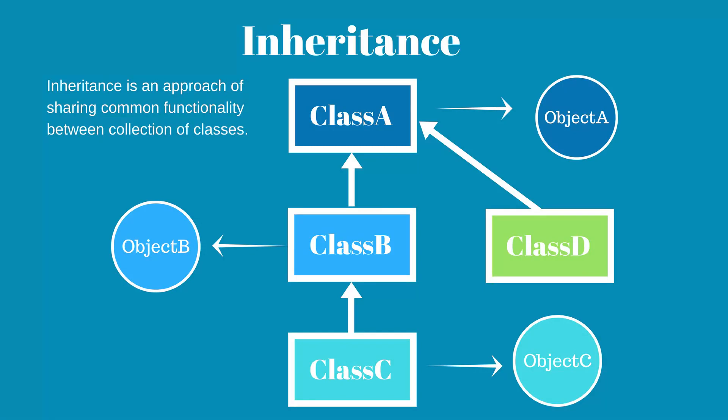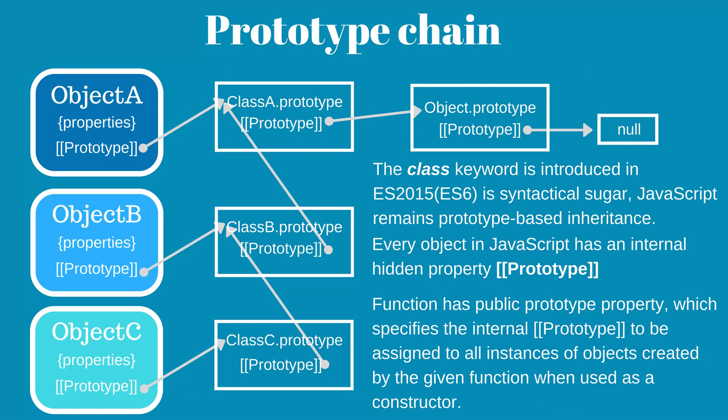Let's investigate the JavaScript prototype chain of objects displayed on the diagram. The class keyword was introduced in ECMAScript 6 and is syntactical sugar — JavaScript still remains prototype-based inheritance. Every object in JavaScript has an internal hidden property called prototype. Under the hood, a class is still a function, and each function has a public property prototype, which specifies the internal prototype to be assigned to all instances created by the given function when used as a constructor. Object A was instantiated from class A, and object A's internal prototype is a reference to the class A prototype property.